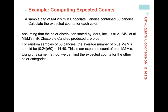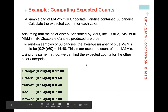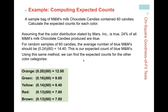To compute expected counts, just multiply the claimed proportion by the sample size. With 60 candies: expected blues = 14.4, expected orange = 12, green = 9.6, yellow = 8.4, red = 7.8, brown = 7.8. Expected counts are not necessarily integers — leave them as decimals. Looking at the table of observed vs. expected, there's a large difference for yellows: we observed 15 but expected only 8.4.